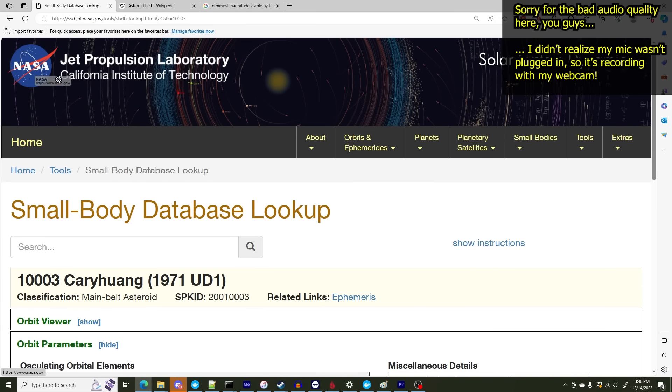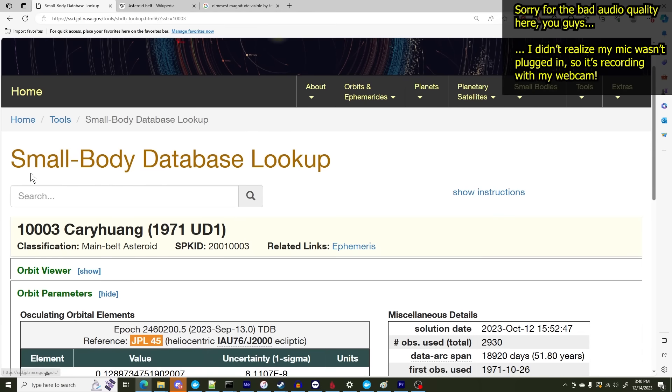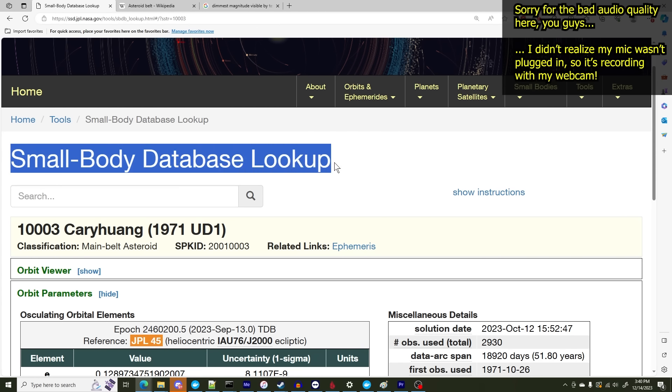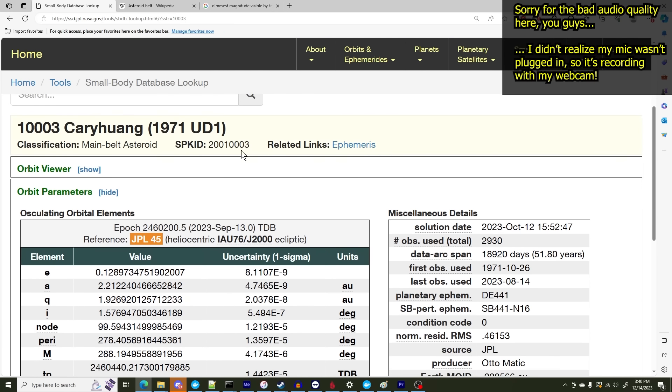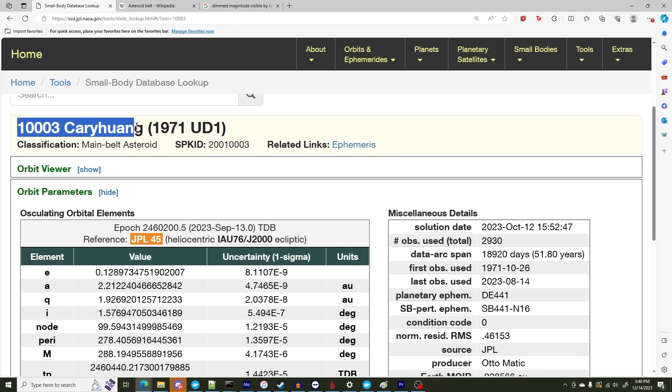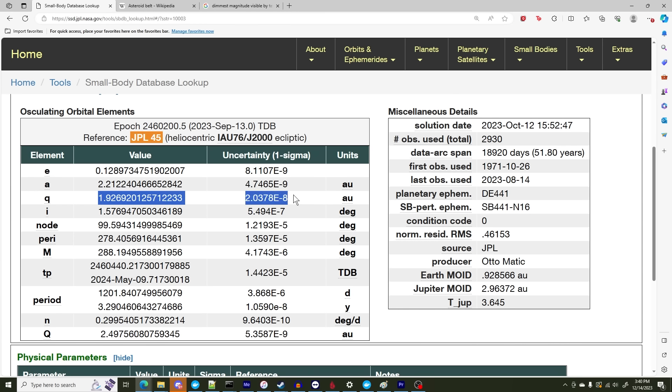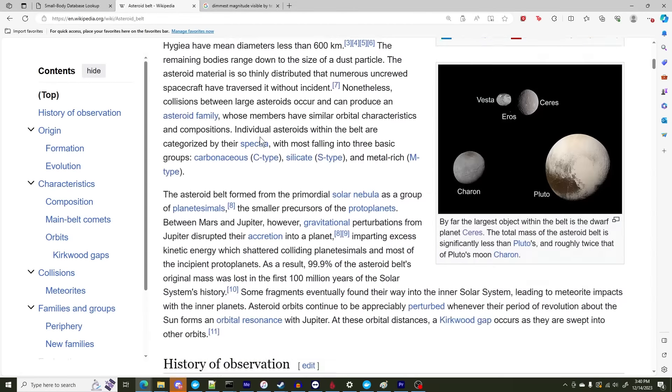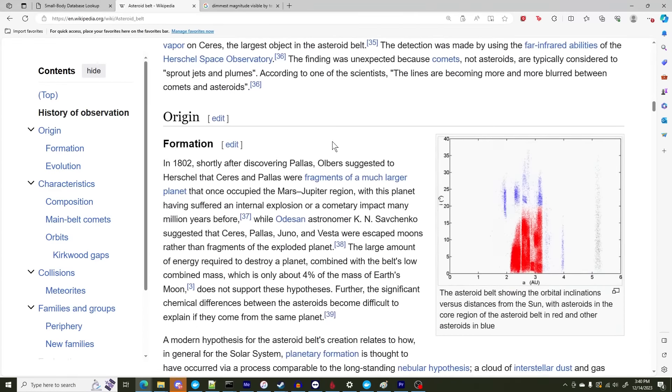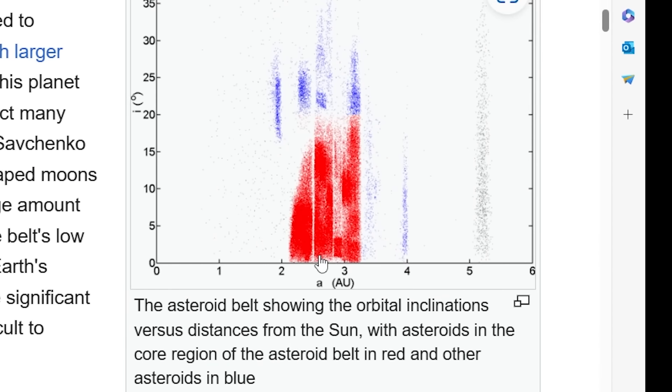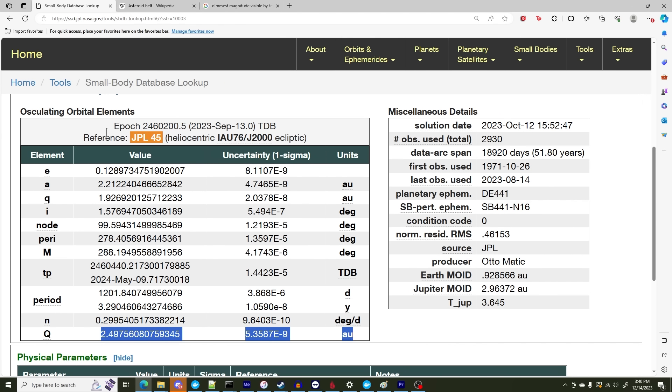So Caltech's Jet Propulsion Laboratory has this pretty nifty website called the Small Body Database Lookup, where you can find details about pretty much anything that orbits the sun, such as 10,003 Kari Huang. And here's some interesting stats I found. So little Q and big Q are like the closest and furthest distance that it orbits the sun by, in AU. So you can see that it orbits about 2 to 2.5 times the distance from Earth, which puts it at the inner edge of the asteroid belt. So it's good to know that Kari Huang has friends in the asteroid belt.